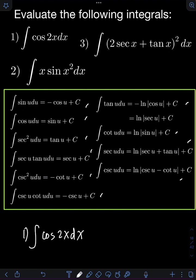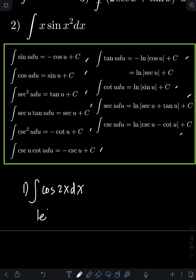You must memorize all these formulas when you are evaluating integrals of trigonometric functions. So for our problem here, before we can apply the trigonometric formula for this integral, let's apply u-substitution first. So I can let u be equal to 2x, then get the derivative of both sides. The derivative of u is du, and the derivative of 2x is 2dx.